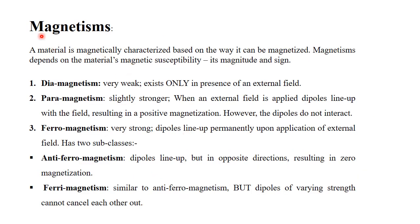Now, magnetism is a magnetically characteristic property and can be magnetized. Magnetism depends on the material's magnetic susceptibility — its magnitude and sign — and can be classified as diamagnetism, paramagnetism, and ferromagnetism.